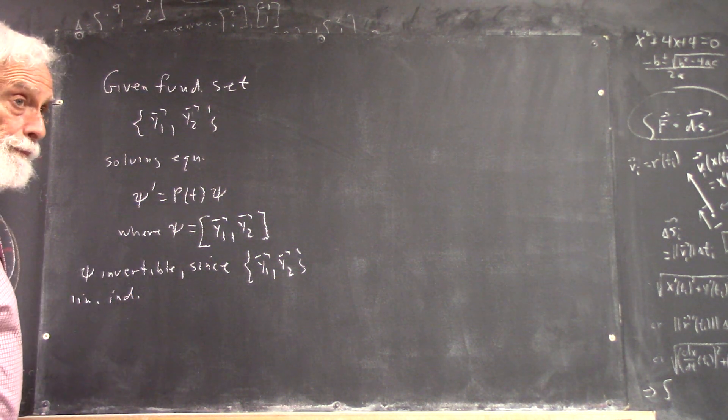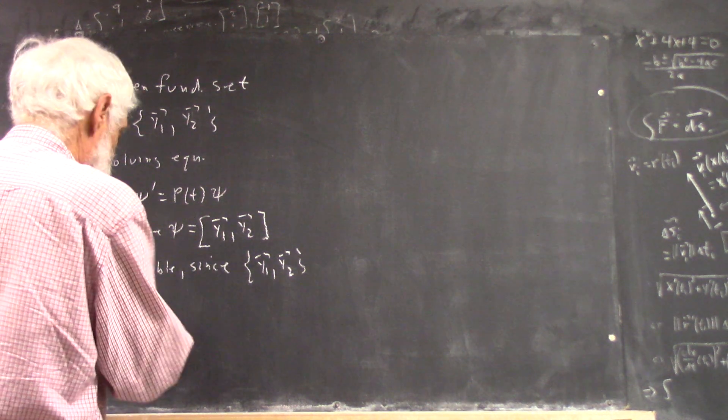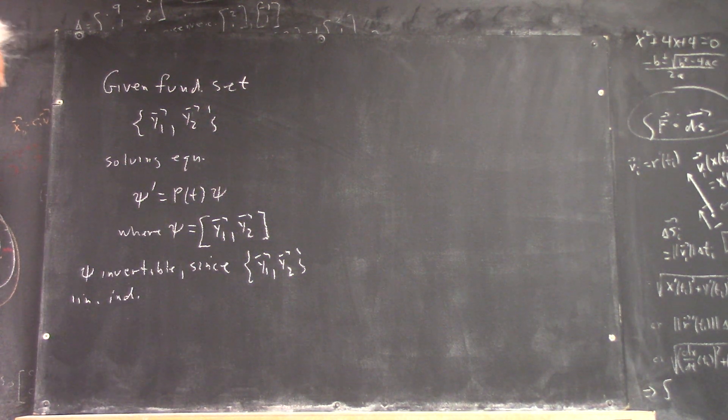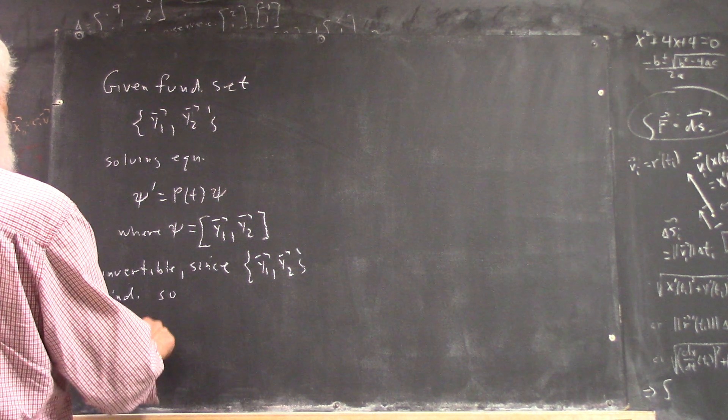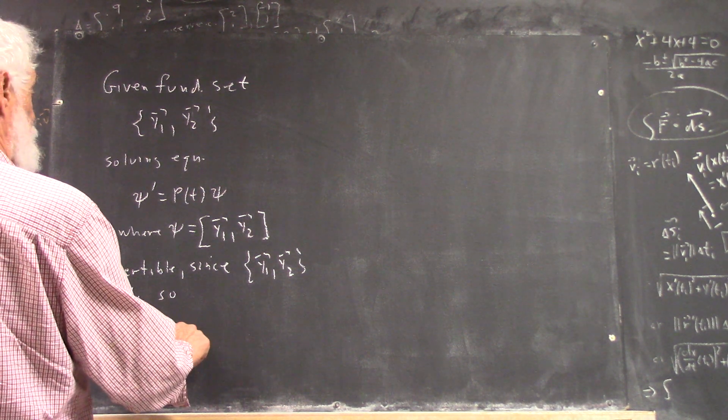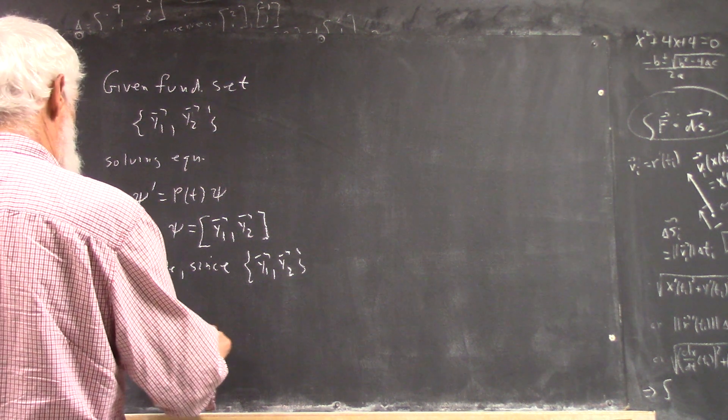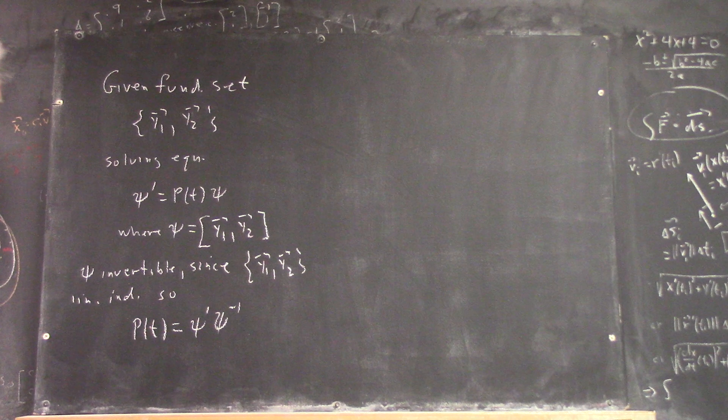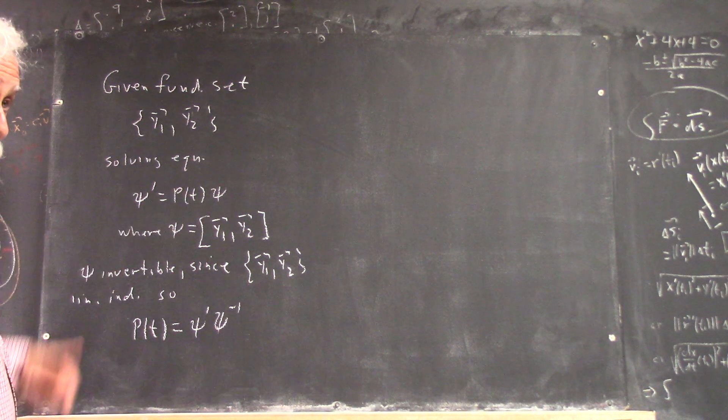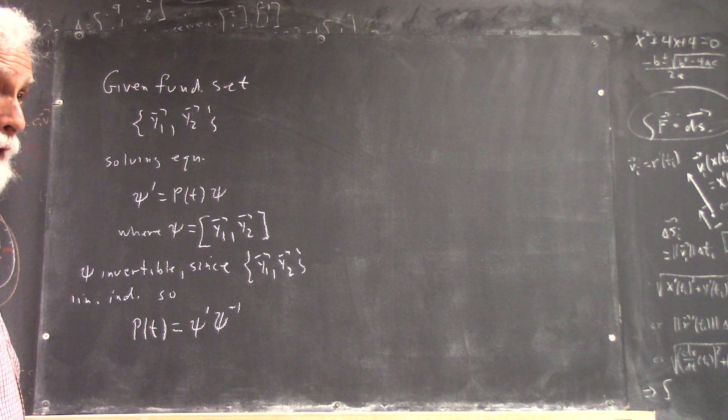In other words, its determinant is non-zero, which automatically makes ψ invertible. So, P(T) = ψ' ψ⁻¹. I'll just multiply both sides of this on the right by ψ inverse.